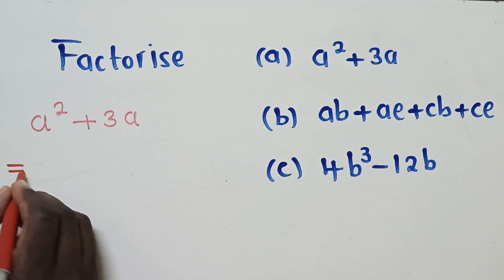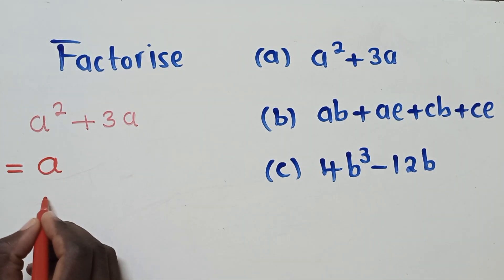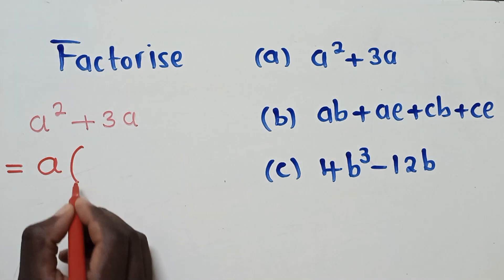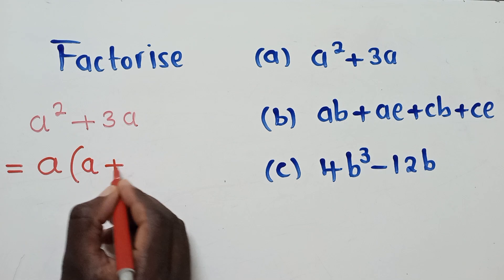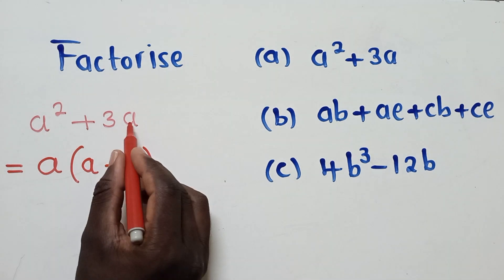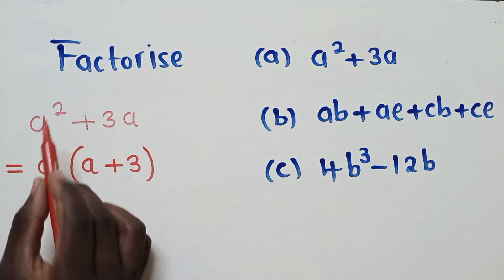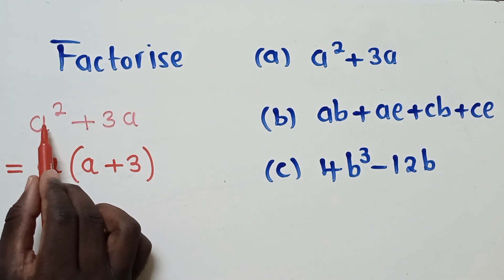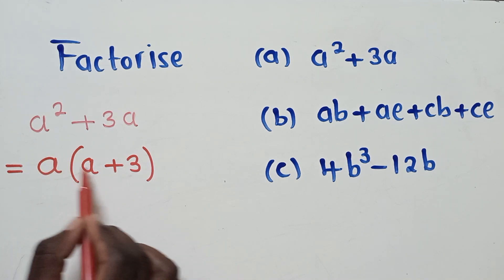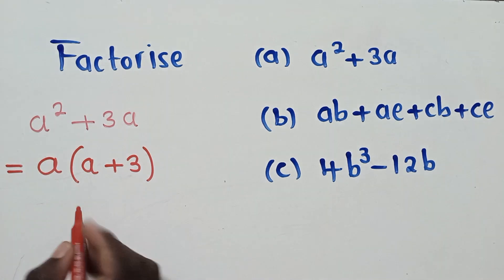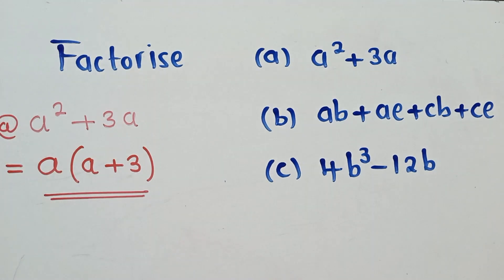We write 'a' as the common factor outside the brackets. Inside the brackets we have a + 3, because the 'a' has gone out. We had two a's because of the power 2, one went outside, so one remains inside the bracket. That is our solution for question A.